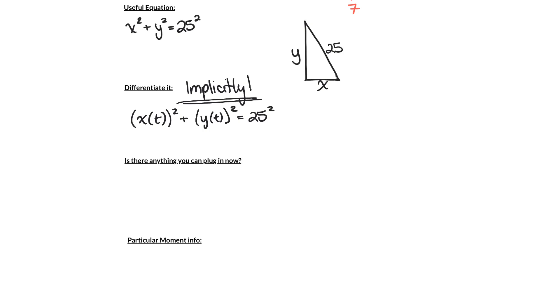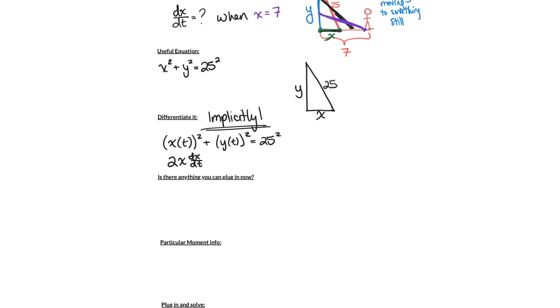So when we differentiate with respect to t, we're going to get 2x(dx/dt)—we're using the chain rule—plus 2y(dy/dt) equals—and don't forget to take the derivative of 25²—25² has no, it's not changing with respect to t at all. It's constant, so it's zero.